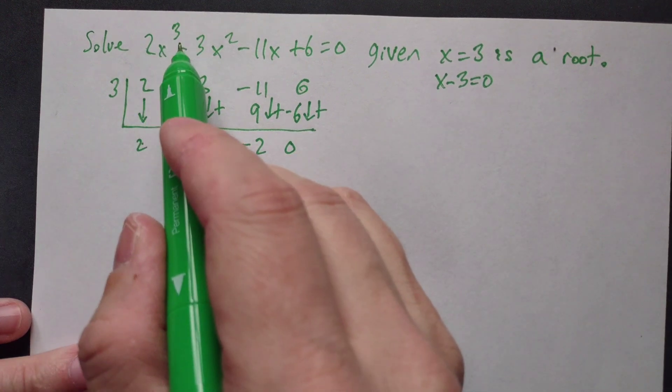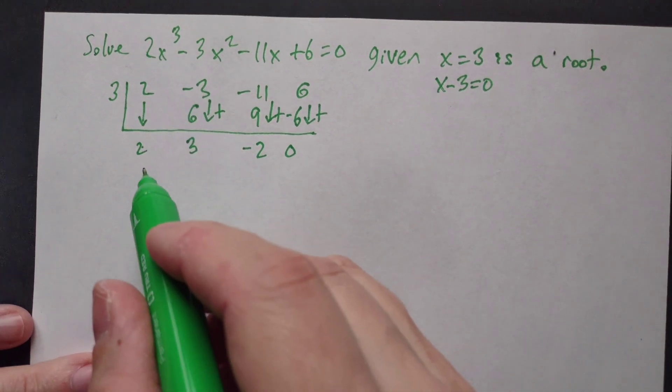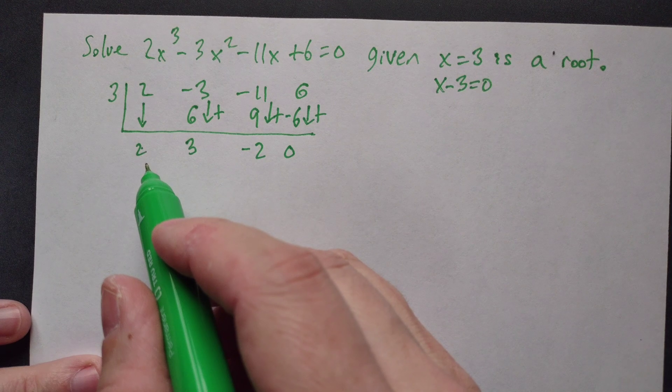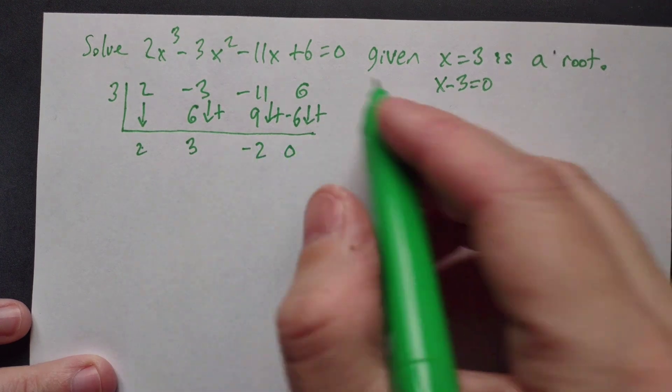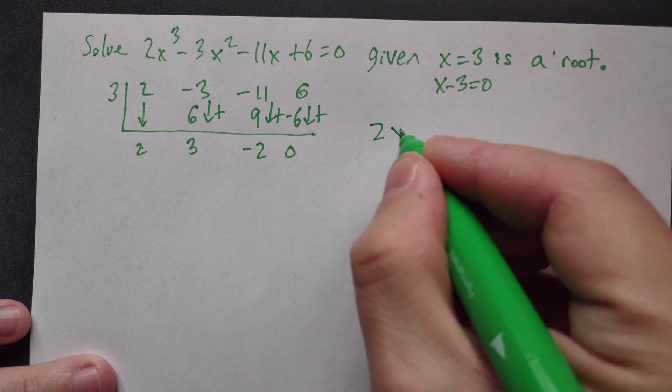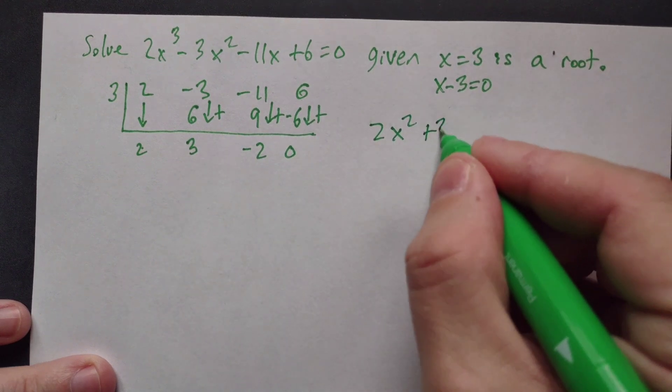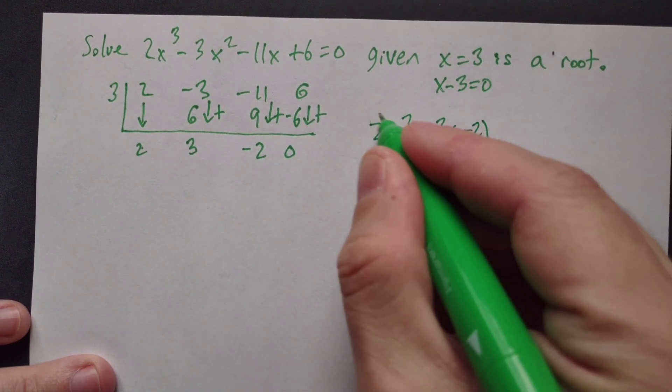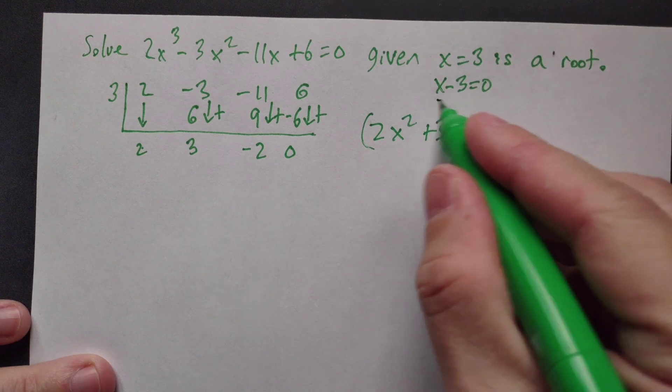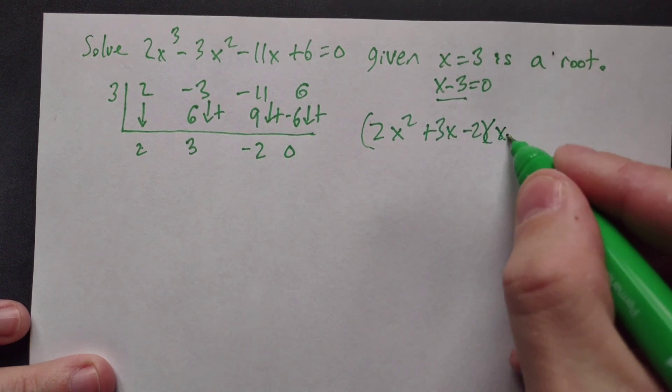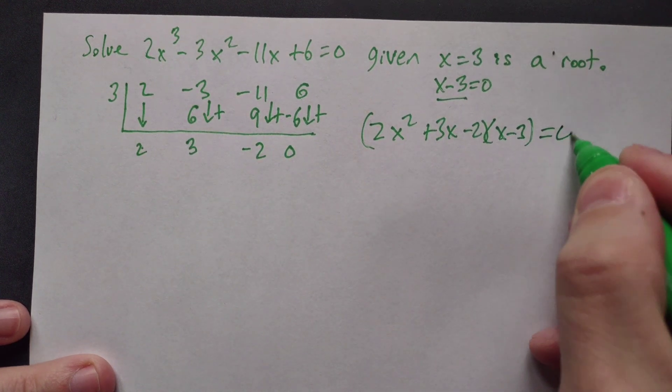Since x³ is the highest power, the 2 here corresponds to x². We can rewrite the left side as (2x² + 3x - 2)(x - 3) = 0.